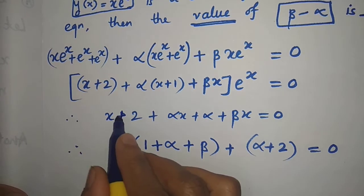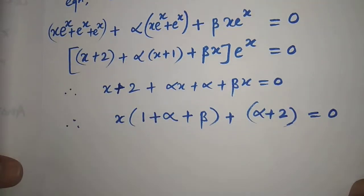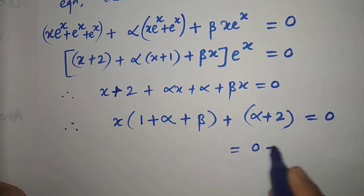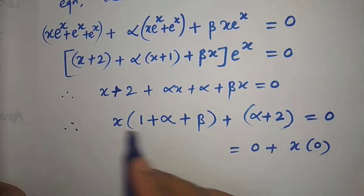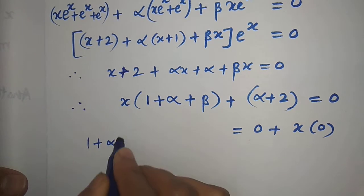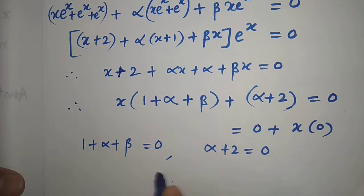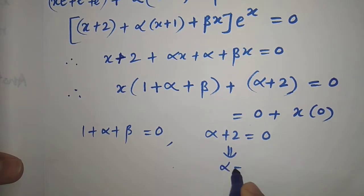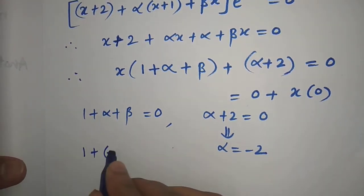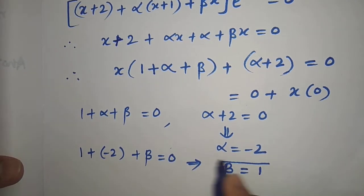Since e raised to x is never 0, we get x into (1 plus alpha plus beta) plus (alpha plus 2) equal to 0. Writing 0 as 0 plus x into 0 and comparing like powers of x on both sides: 1 plus alpha plus beta equal to 0, and alpha plus 2 equal to 0. From the second equation alpha equal to minus 2, and substituting gives 1 minus 2 plus beta equal to 0, so beta equal to 1.